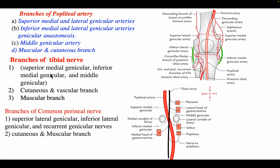The branches of the tibial nerve include the superomedial genicular nerve, inferomedial genicular nerve, middle genicular nerve, and small cutaneous, vascular, and muscular branches. The branches of the common peroneal nerve are the superolateral genicular nerve, inferolateral genicular nerve, recurrent genicular nerve, and small cutaneous and muscular branches.